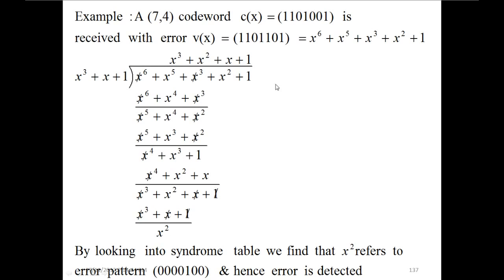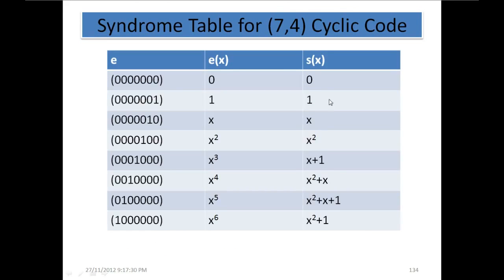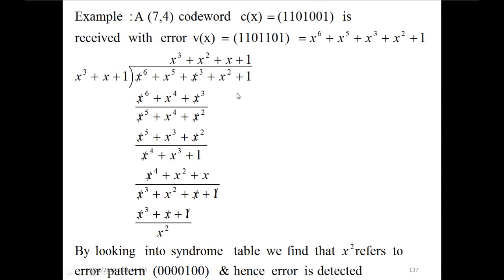Since we have got a remainder, it means that there is an error in the received code. Now we have to find the location of the error to correct it. Looking at the syndrome table, x² corresponds to error bit location 3. So we correct the third bit — since it is a binary number, if it is 1 we change it to 0. Here it is 1, so we change it to 0, and after changing it we have received the correct code word: 1 1 0 1 0 0 1. That is how we do decoding, error detection, and correction.